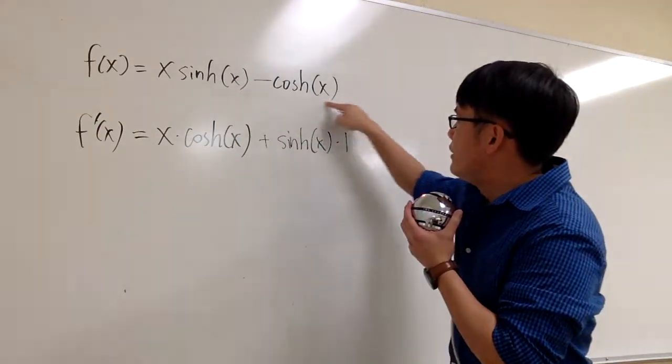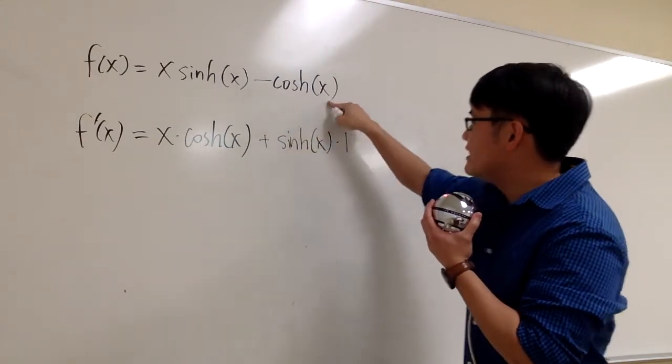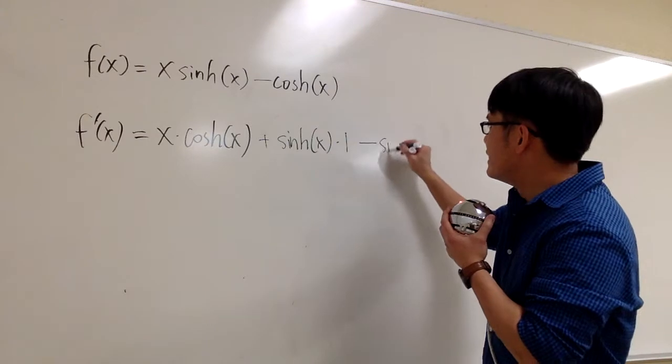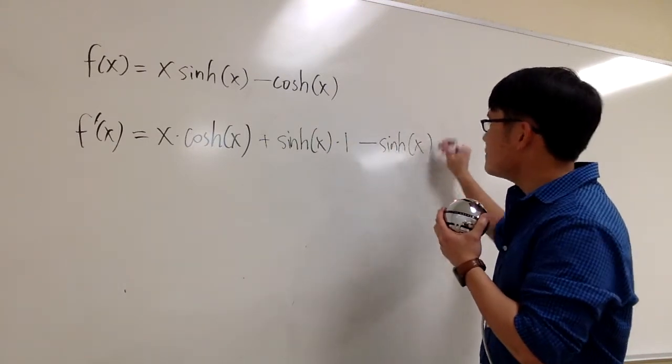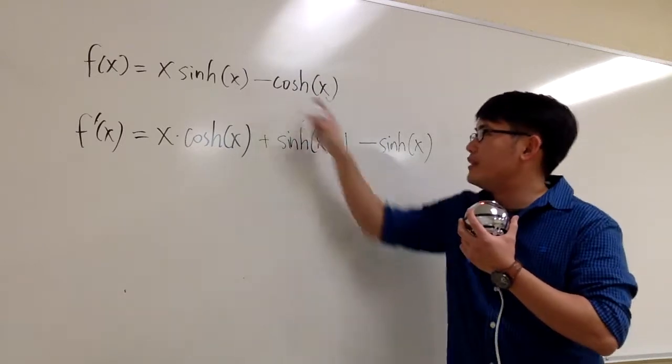And then we continue with this. The derivative of negative cosh x is going to be negative sinh x, because the derivative of cosh is just sinh, and you bring down the subtraction.